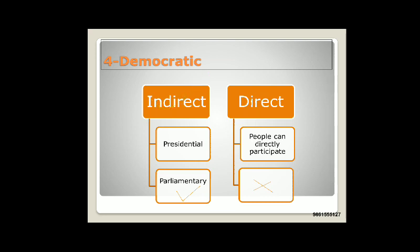Indirect democracy is again of two types: one is the presidential form and another is the parliamentary form of democracy. In the parliamentary form, the executive is answerable to the legislature, but in the presidential form, the president or executive is not answerable to the legislature.